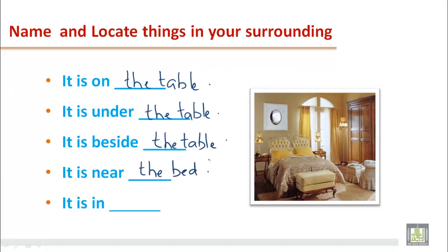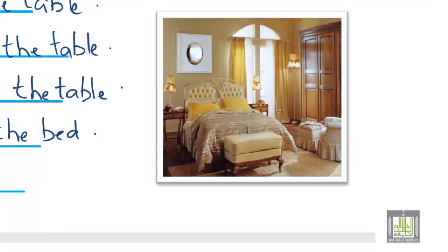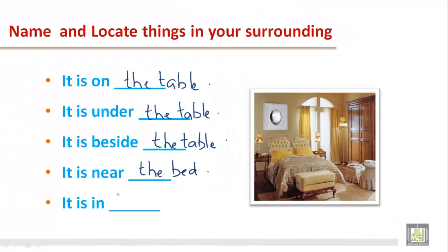And if we can see a drawer here, and this drawer has a mobile, if someone asks you where is the mobile, you can say: it is in the drawer. So this is how we name and locate things in our surrounding — we should know what the things are, where they are, and what the position of the object is.